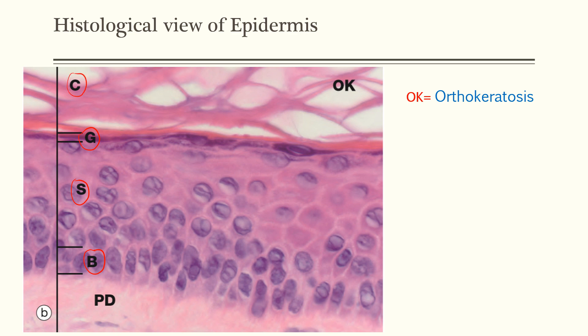In the corneum layer, there is a term we encounter: orthokeratosis. What is this? This is the normal pattern of stratum corneum — so it's a normal pattern. It's important to know this because there are other terms known as hyperkeratosis and parakerytosis. In parakerytosis, there is retention of nuclei.